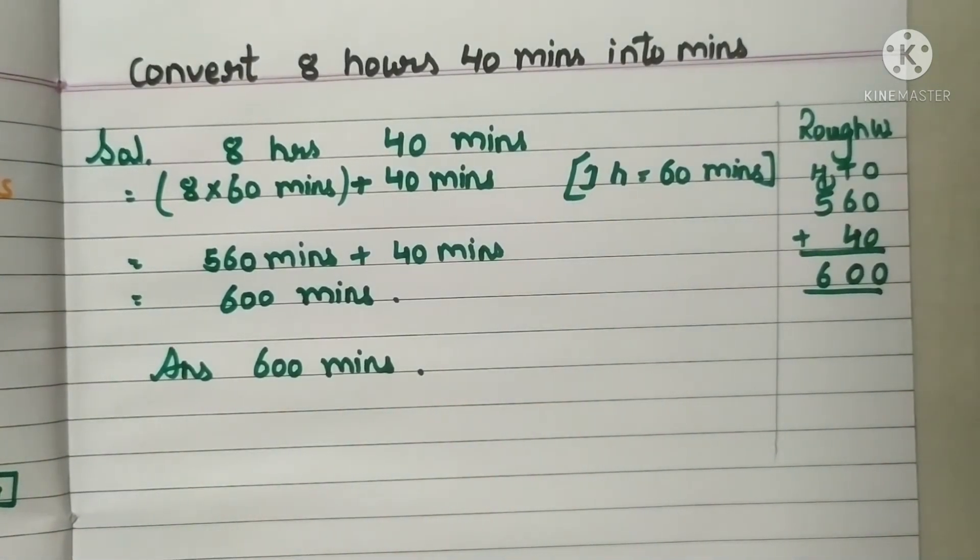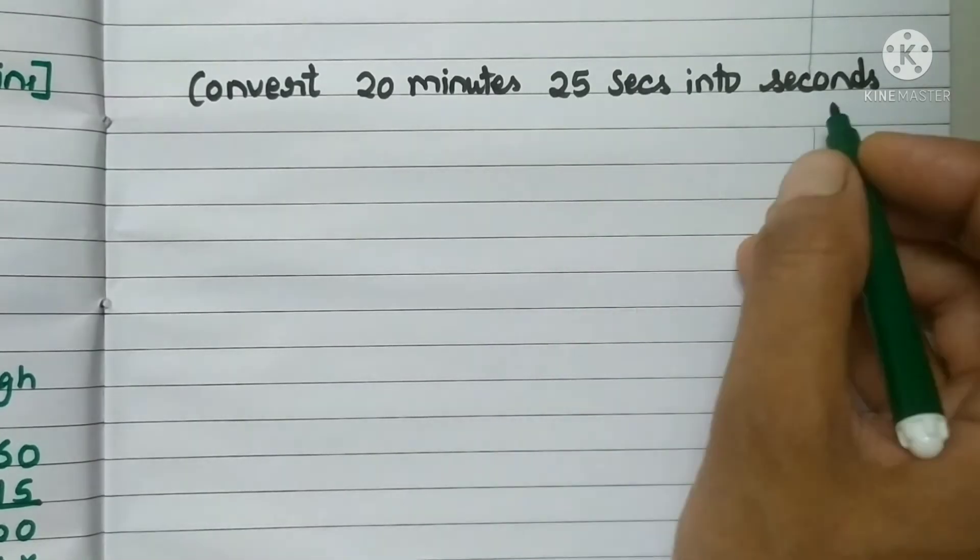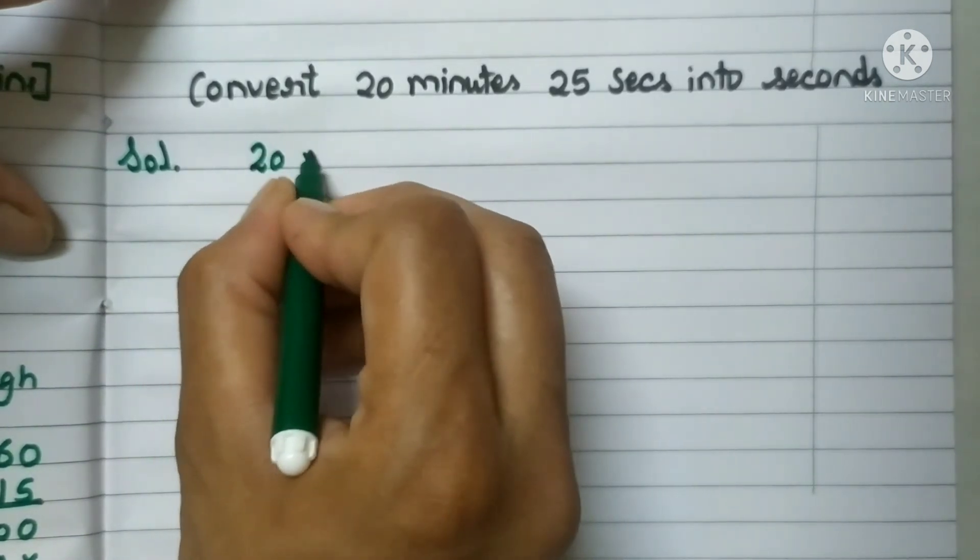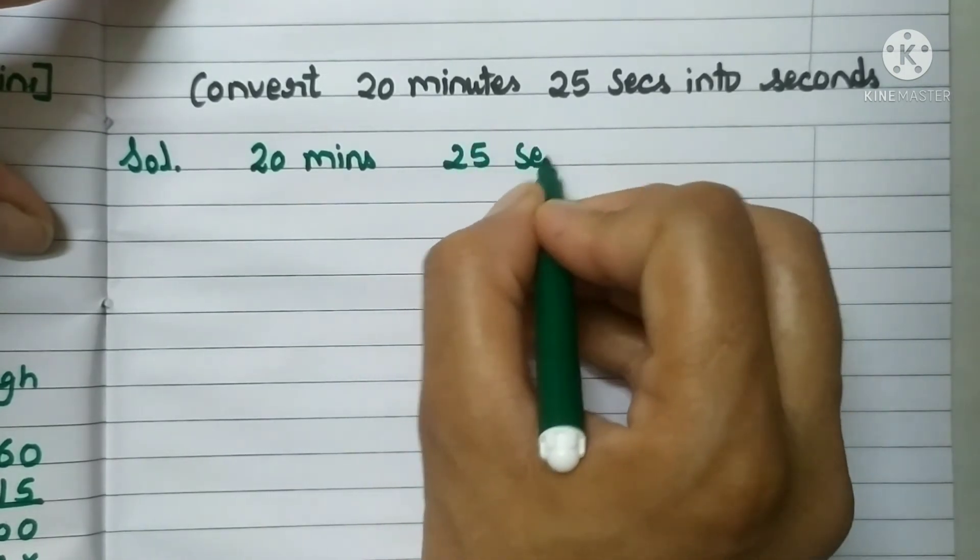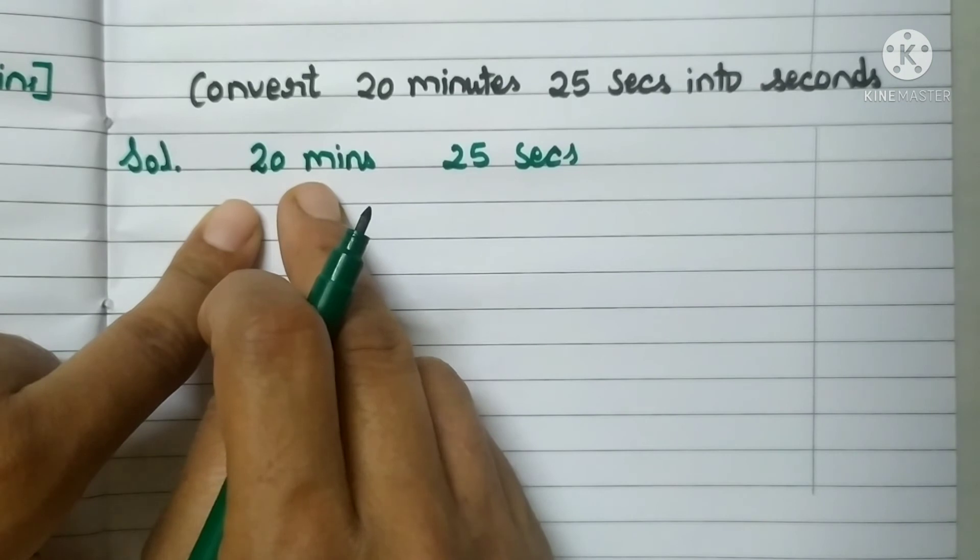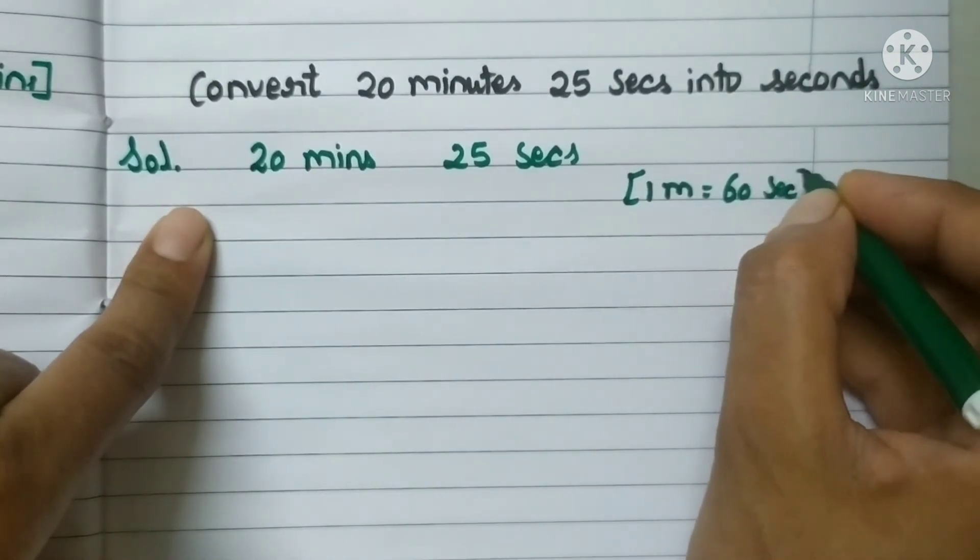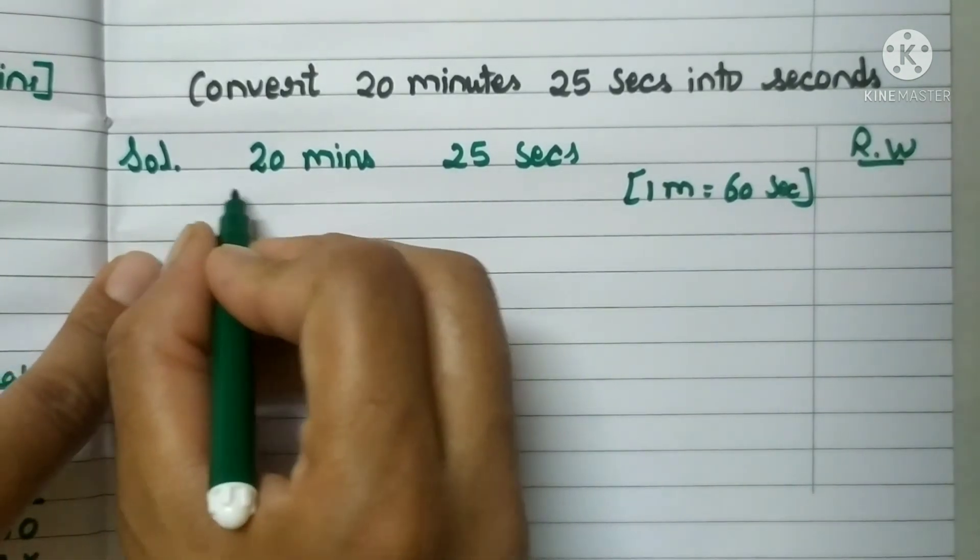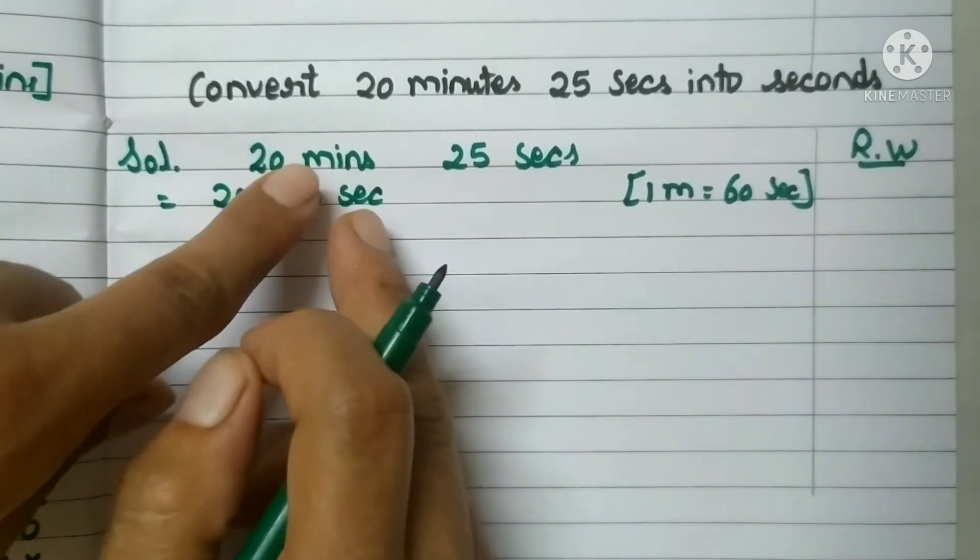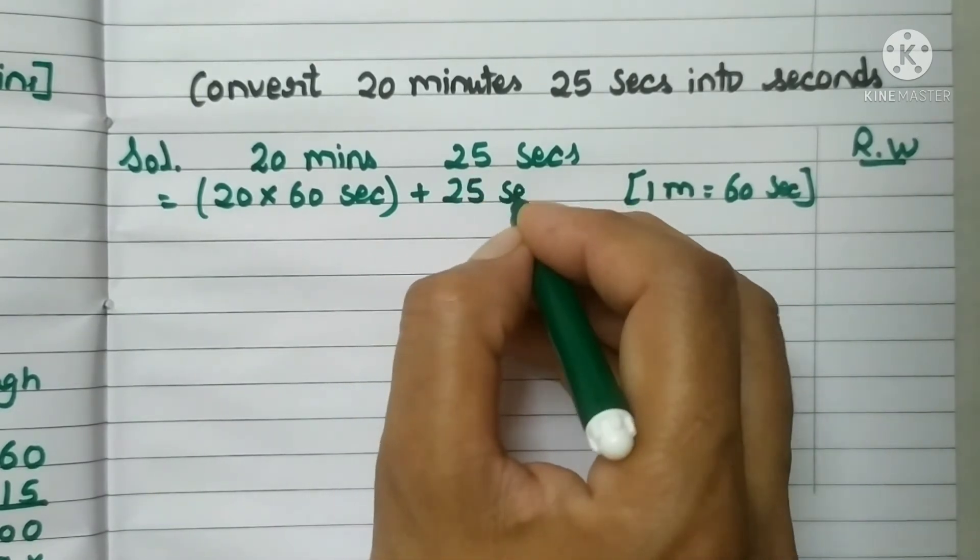It's very easy. The next question is convert 20 minutes 25 seconds into seconds. So again we will start with solution. The first thing we have to write this: 20 minutes and 25 seconds. We can't convert seconds into seconds, so it stays as it is. But we can convert 20 minutes into seconds. And we know the formula is 1 minute equals to 60 seconds. This is our rough work area.